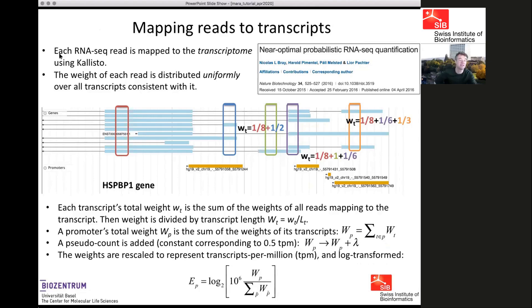We make use of the Kallisto tool from the group of Lior Pachter. We map each RNA-seq read to the transcriptome using Kallisto, then make a slight change from how Kallisto estimates gene expression: when a read maps to multiple transcripts, we uniformly distribute it over all transcripts it is consistent with.